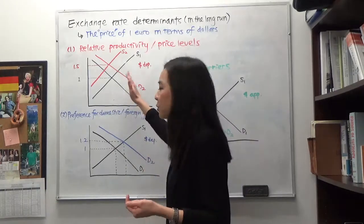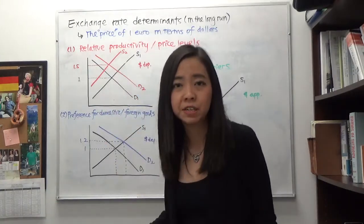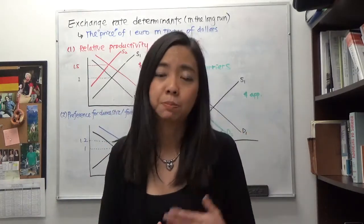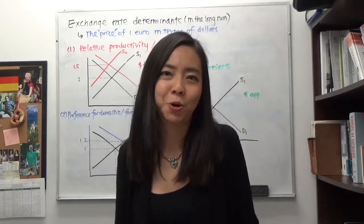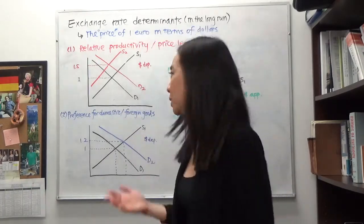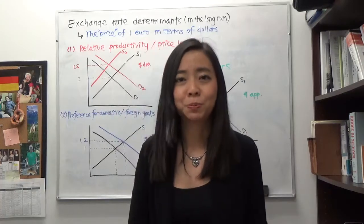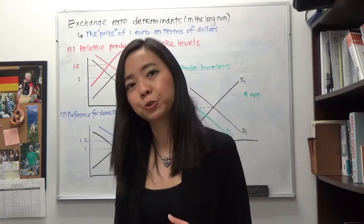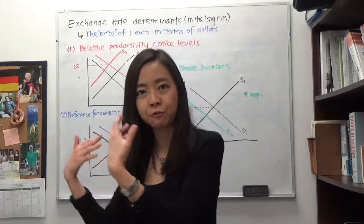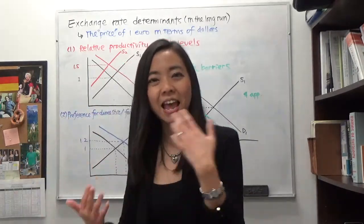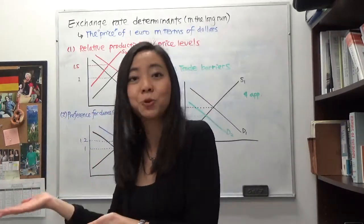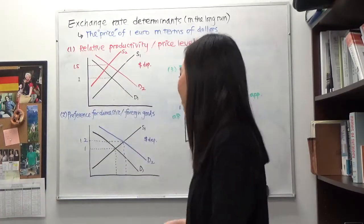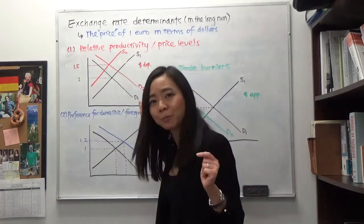So where does this demand and supply come from? It really is a derived demand. So the reason why we demand euro is not because it's fun to hold on to euro, but rather because we're trying to do business with the Europeans. If you want to buy German beer, then the importer will have to import the German beer from Germany and the importer will have to pay them euro to buy this beer. So that's where the demand for euro comes from.